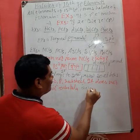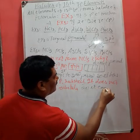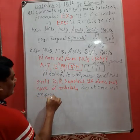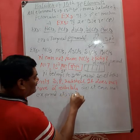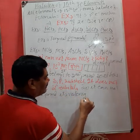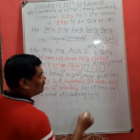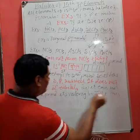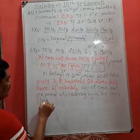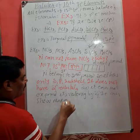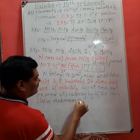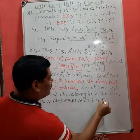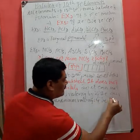So it cannot expand its valency beyond 4. It can show maximum valency 4. So NCl5 does not exist.